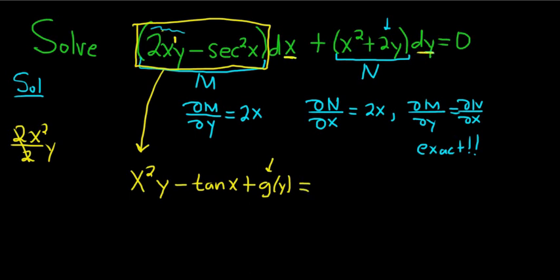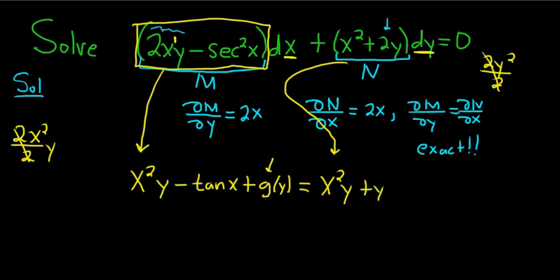Now there's a y here, so we integrate this one with respect to y. x squared is a constant — integrating x squared y with respect to y gives x squared y. Integrating 2y with respect to y gives 2y squared over 2, which is just y squared. Then we add an unknown function of the other variable, f of x, because when you integrate with respect to y you add an unknown function of x.